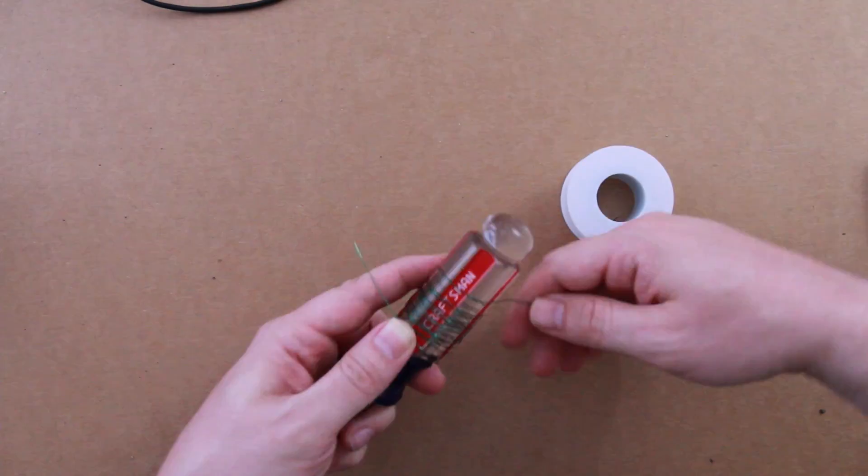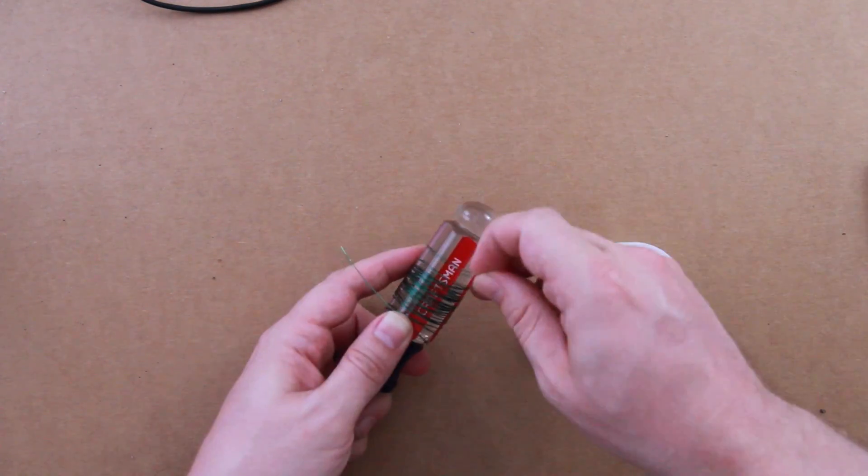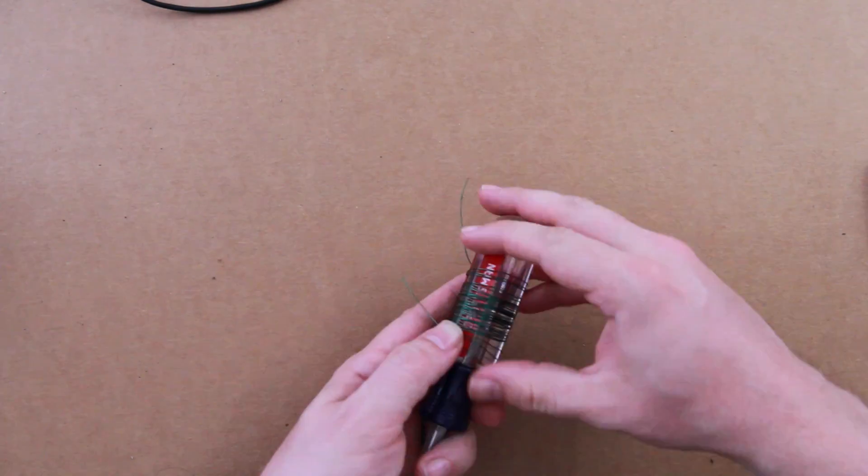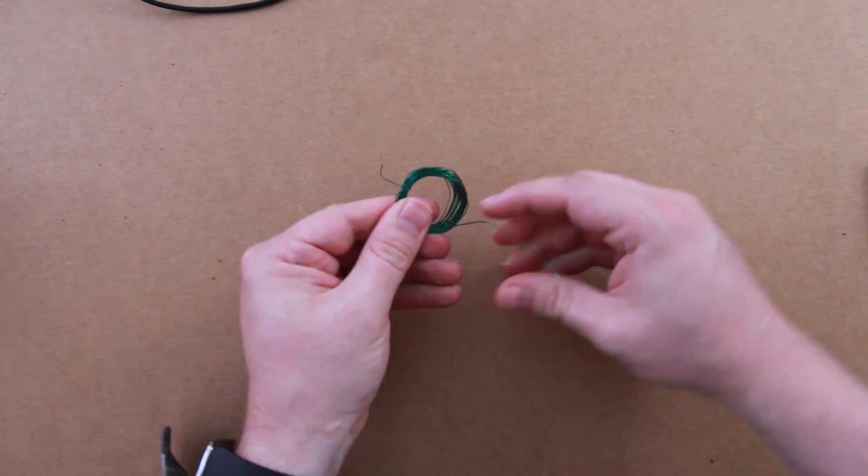I just used the handle of this screwdriver to wrap it around. You want to have about 30 coils before you stop, and then when you're done slide it off the handle and you can wrap the leads around the coil to hold it together.